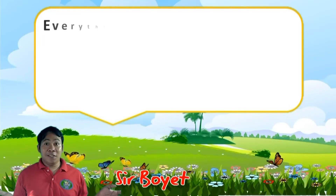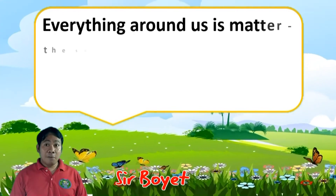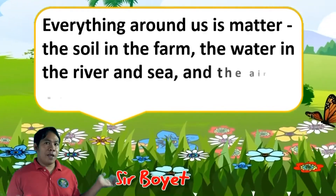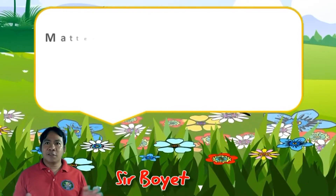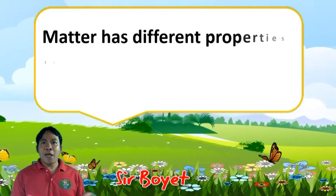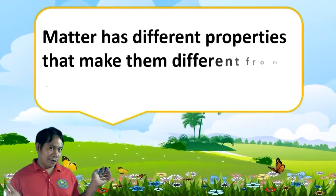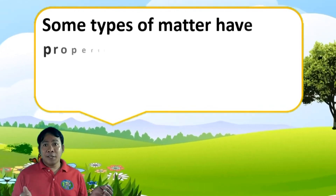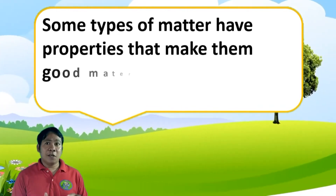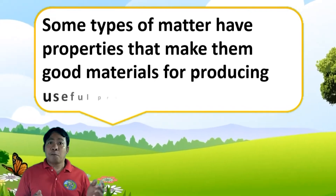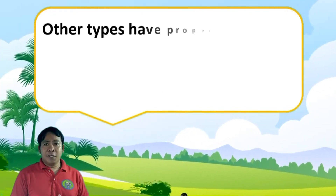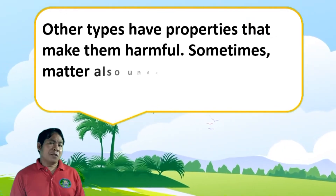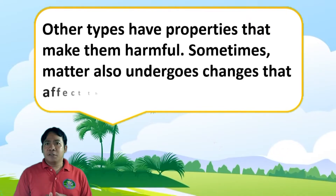Everything around us is matter — the soil and the farm, the water and the river and sea, and the air we breathe. Matter has different properties that make them different from one another. Some types of matter have properties that make them good materials for producing useful products. Other types have properties that make them harmful. Sometimes, matter also undergoes changes that affect their properties.